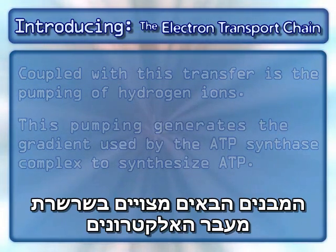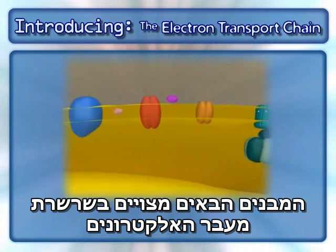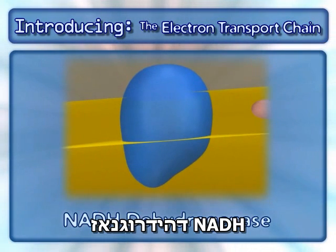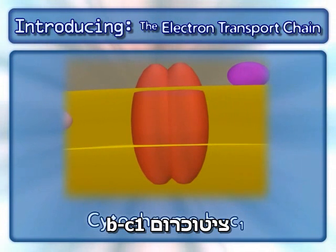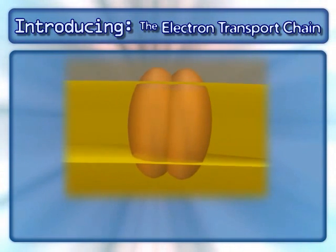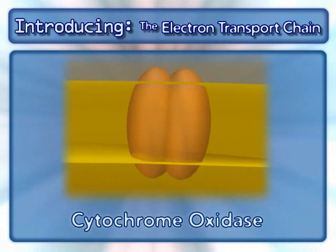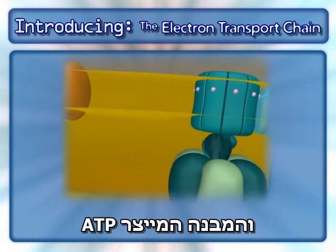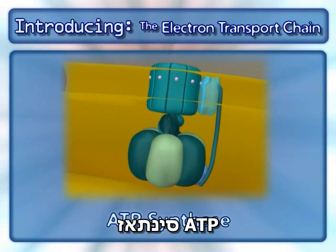The following complexes are found in the electron transport chain: NADH dehydrogenase, cytochrome BC1, cytochrome oxidase, and the complex that makes ATP, ATP synthase.